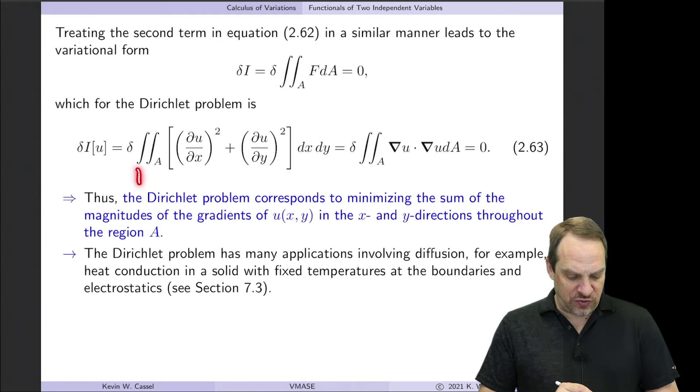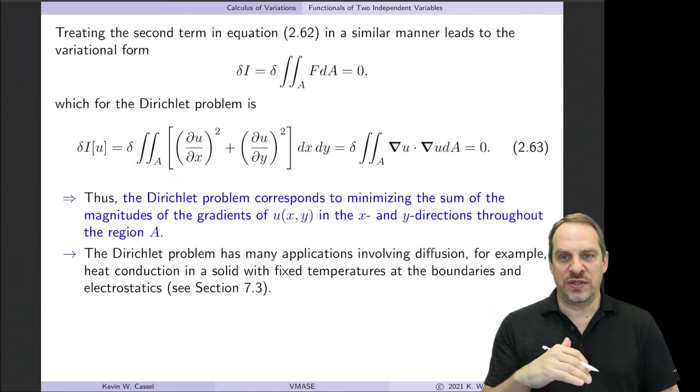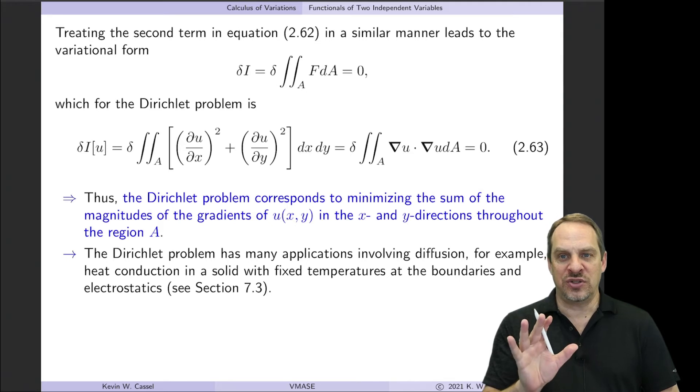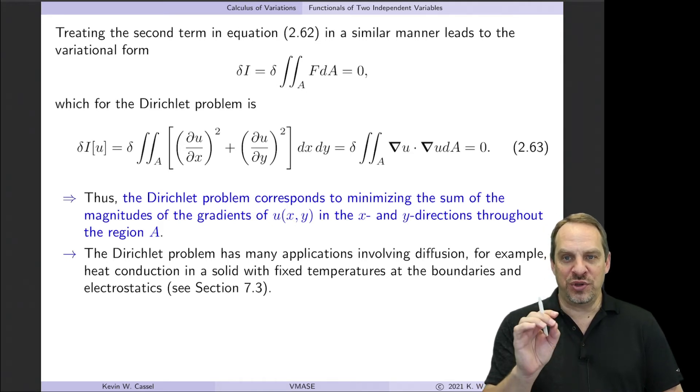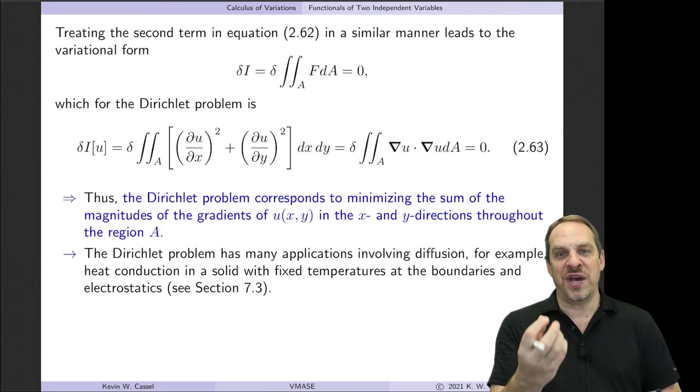Now you can also write this in vector notation as ∇u·∇u if you'd like. So let's just take a look at this form right here. Here's my functional. And I just want us to think about what does this tell us about the processes, the physical processes that are governed by Laplace's equation. The contention I would make is, the only reason why we know that Laplace's equation governs diffusive processes is because we've been told that over and over again. If you look at Laplace's equation by itself in differential form, that does not scream diffusion.